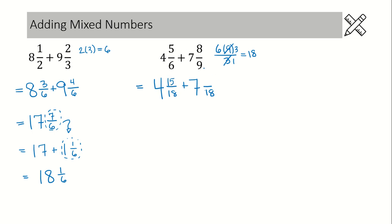In our next fraction, we had a nine and now it's 18, so we're multiplying by two — two times eight is 16. Now that we have common denominators, we can add everything up. We do the whole numbers first: that would be 11. Then we add the fractions — put in your denominator of 18, because we don't add the denominators — and add those numerators to get 31.